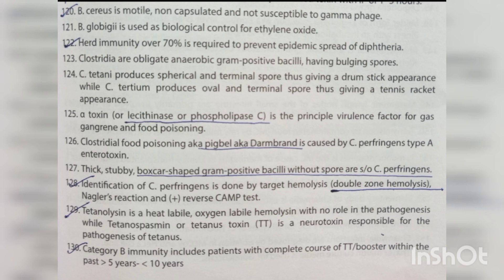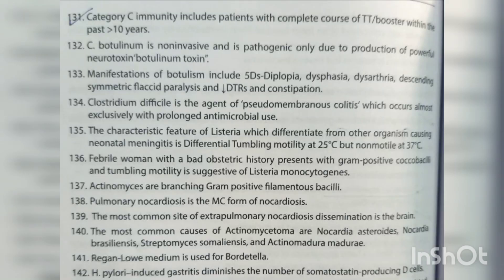Category B immunity includes patients with complete TT course or booster within the past 5–10 years. Category C immunity includes patients with complete TT course or booster within the past >10 years. C. botulinum is non-invasive and pathogenic only due to production of a powerful neurotoxin. Manifestations of botulism include 5 D's: diplopia, dysphagia, dysarthria, descending symmetric flaccid paralysis, decreased deep tendon reflexes, and constipation. Clostridium difficile is the agent of pseudomembranous colitis, occurring almost exclusively with prolonged antimicrobial use.